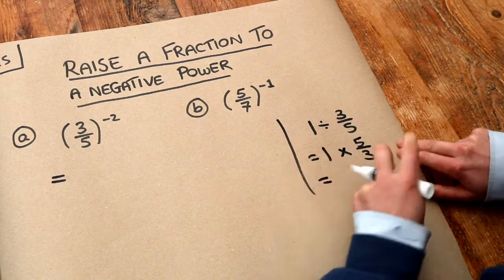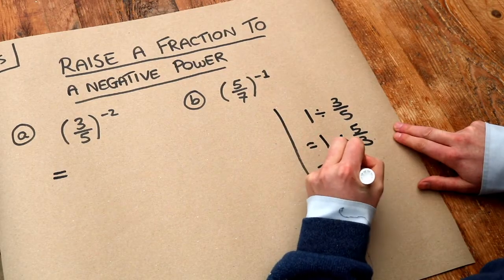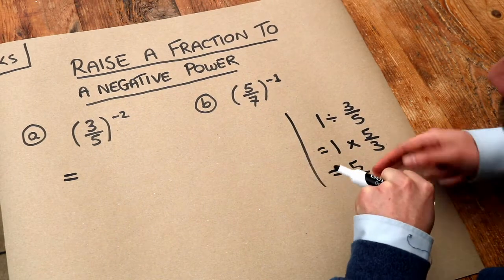And 1 times anything is itself, so that's just 5 over 3. So we can see when we do 1 divided by a fraction, it flips it upside down.